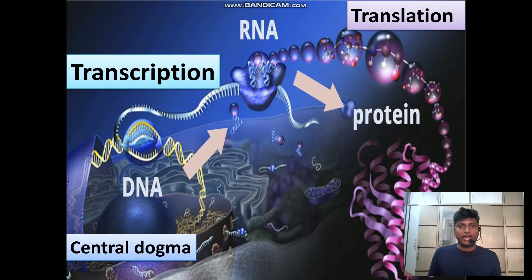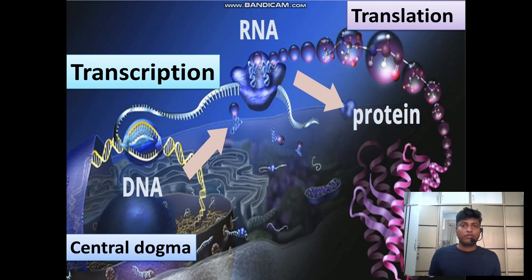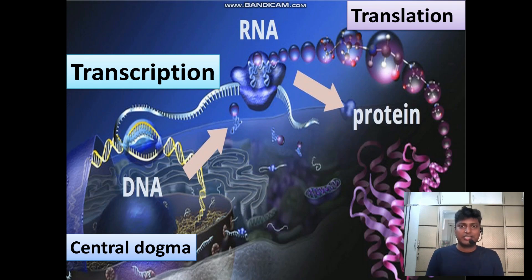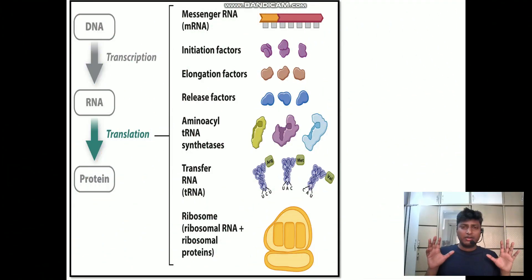This entire flow of information — from DNA into RNA and from RNA into proteins — is called the central dogma of life. The central dogma means it is a common principle for every living form, whether it is bacteria, plant, or animal. Every living cell performs these two important processes for the formation of proteins, and we all know that proteins are the most important components of every living organism.